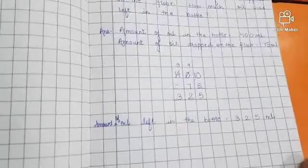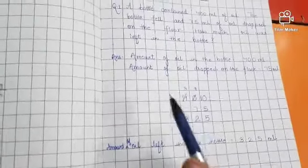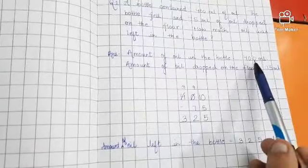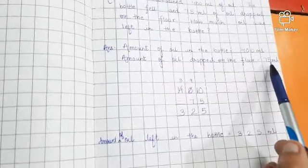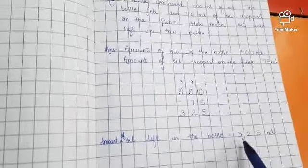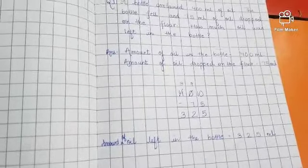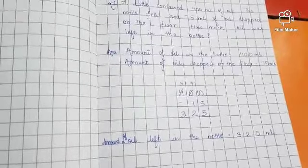ML means milliliters. So total amount in the bottle was 400 ml. Out of that 75 ml fell on the floor. So how much oil is in the bottle? 325 ml.